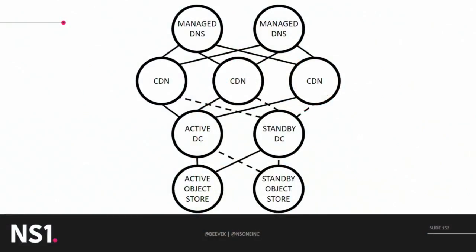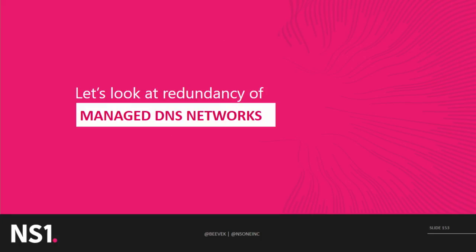So a pretty natural thing for us to do is say we should introduce some redundancy at the cloud service provider layers in our application architectures — maybe multiple DNS networks managing our domains and directing traffic across a bunch of different CDNs and on and on. And that's easy to say, but how do you actually do it? Let's take a quick deep dive into how we might do this today in the context of managed DNS networks, because that's an area I have a little bit of background in.